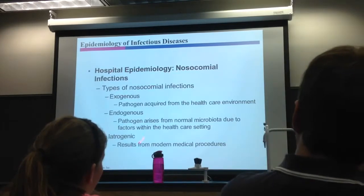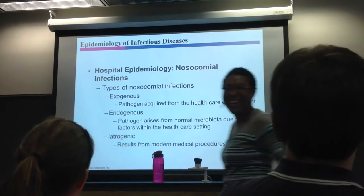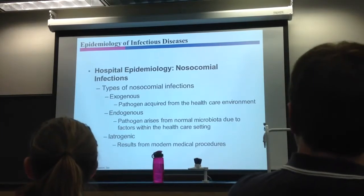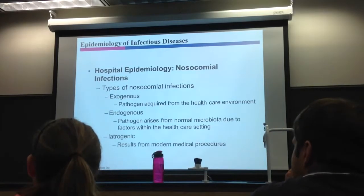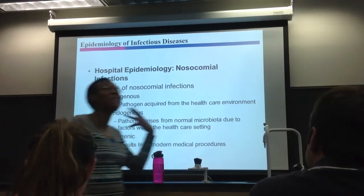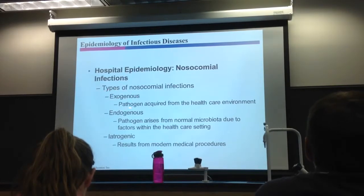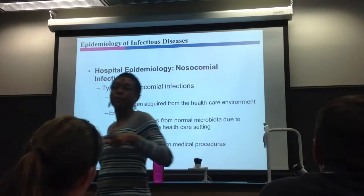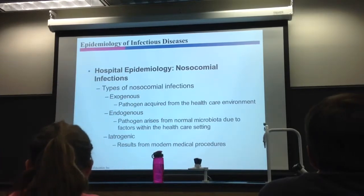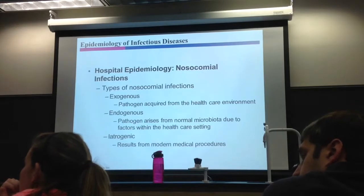Nosocomial infection means hospital-acquired infection. It was on your review sheet. There are three sources: exogenous, endogenous, and iatrogenic. Exogenous means you go into the hospital, acquire a pathogen there, and either bring it home or get stuck in the hospital with it. Hospitals are full of sick people with pathogens, and widespread antibiotic use raises the prevalence of antibiotic-resistant bacteria like MRSA.